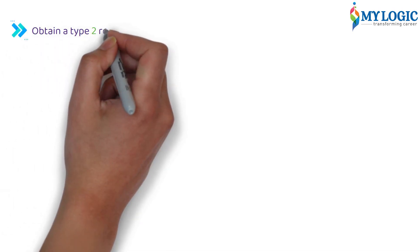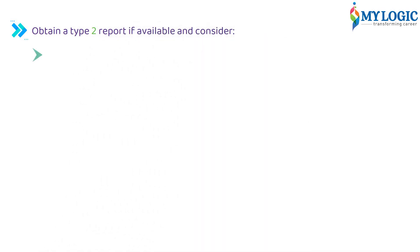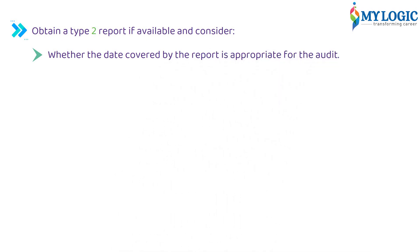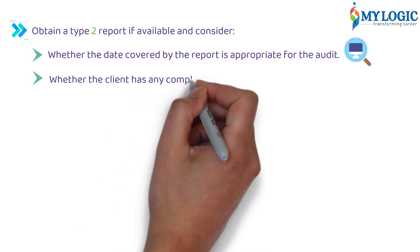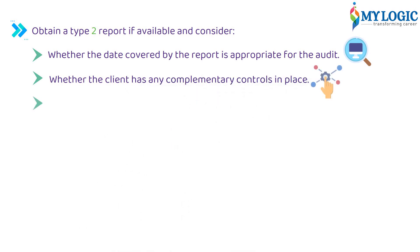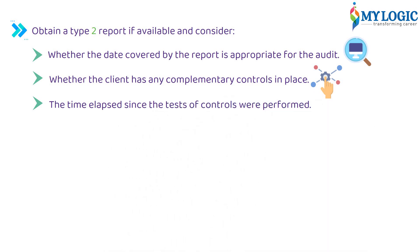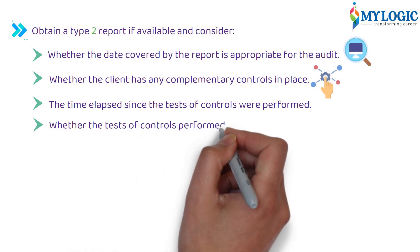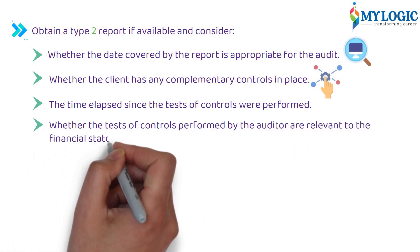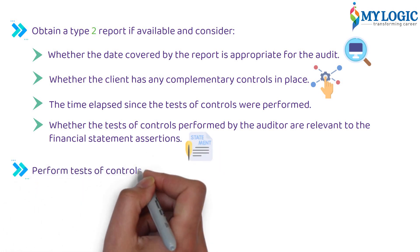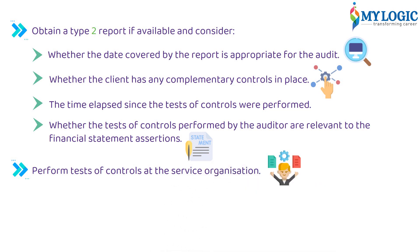If controls are expected to operate effectively, obtain a Type 2 report if available and consider: whether the date covered by the report is appropriate for the audit; whether the client has any complementary controls in place; the time elapsed since the tests of controls were performed; and whether the tests of controls performed by the auditor are relevant to the financial statement assertions.